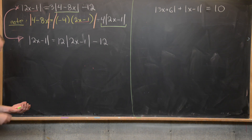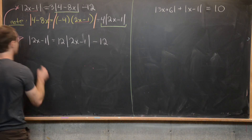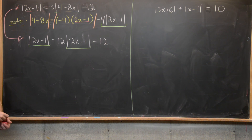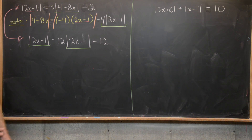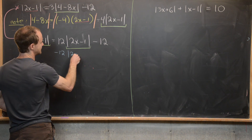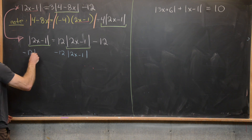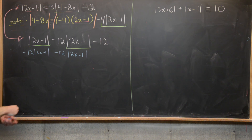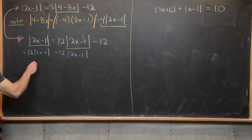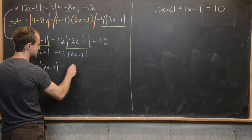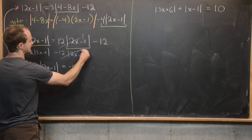Now we want to think about this absolute value term — the absolute value of 2x minus 1 — as being like its own variable. We want to move it around in one piece and combine like terms with it. So let's subtract 12 times the absolute value of 2x minus 1 from both sides. We've got 1 times the absolute value of 2x minus 1 minus 12 of them, giving us minus 11 times the absolute value of 2x minus 1 equals minus 12.